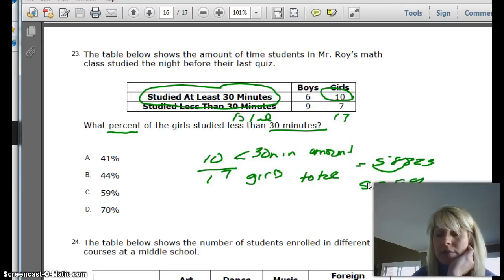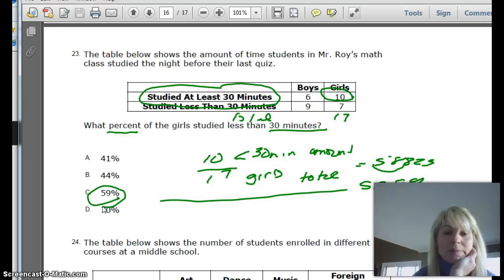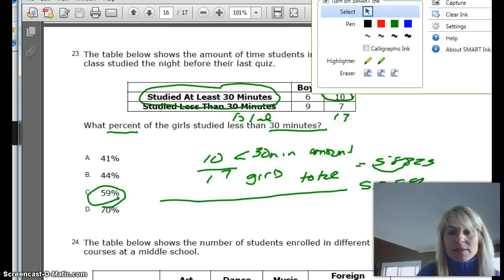That's not so good for Mr. Roy's class, but I guess that's better than no studying at all. And so again, this would match over with C, 59%. So you want to find the amount over the total. And there's a lot of extra data in here. We didn't need to know how many boys there were. We didn't need to know how much they studied because the question was only about girls. So you have to be able to pick out the right stuff.